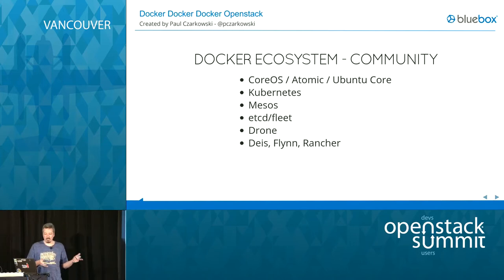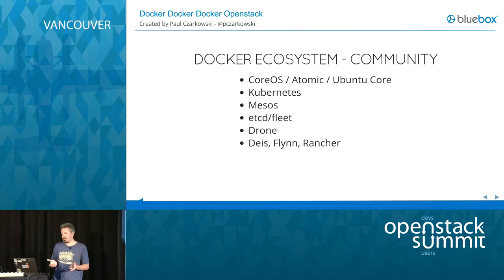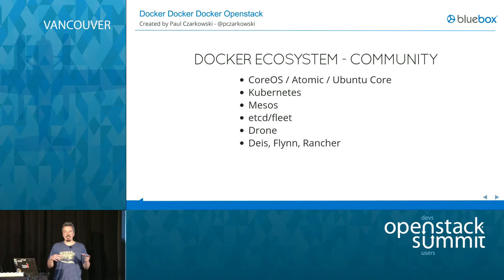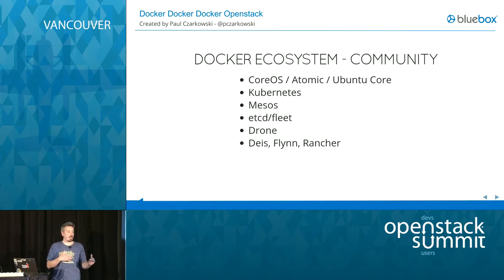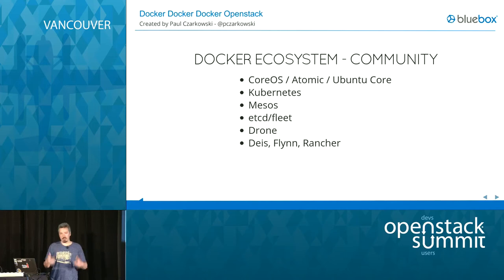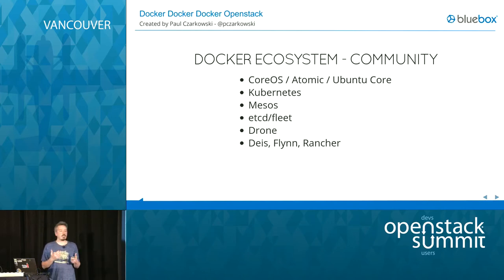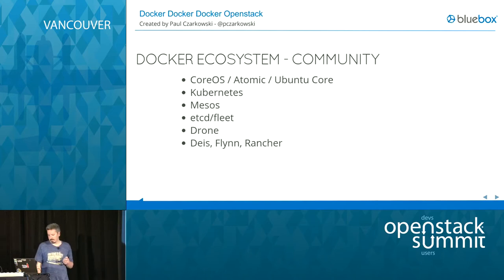In the community we have lightweight OS's designed to run containers like CoreOS, and Kubernetes from Google for multi-machine process scheduling. There's Mesos, which supports Docker and other ways of running processes. We've got etcd and Fleet, which I use quite a lot — if you stand up multiple CoreOS nodes they cluster together and Fleet will spin up a Docker container and choose where to run it, and if that host dies it will spin it up on another host. Drone is a CI tool based on Docker images — super fast, kind of like a private Travis CI. And there are different PaaS platforms built on Docker: Flynn, Rancher, Cloud Foundry Lattice, etc.